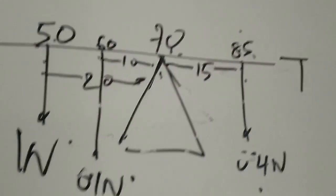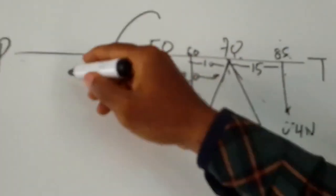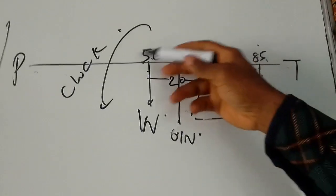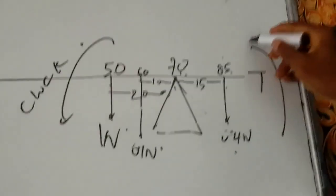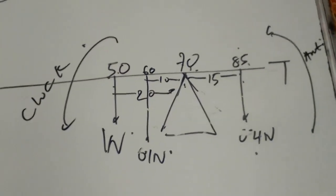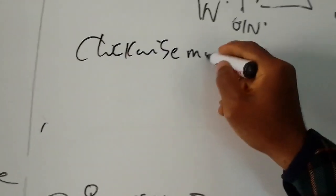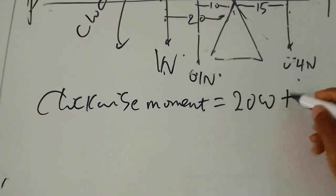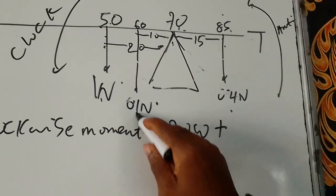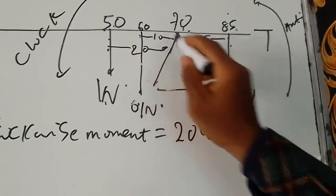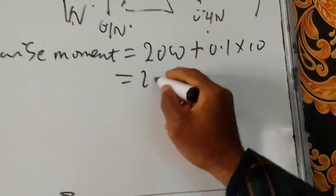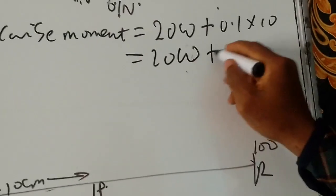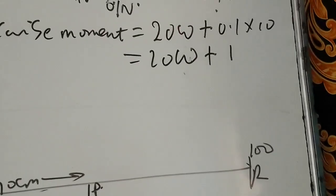Let's assume we rotate the meter rule. Taking this direction as clockwise, and the other side as anti-clockwise. For clockwise moment — moment is force times perpendicular distance — the force here is W multiplied by 20, giving 20W, plus 0.1 times 10, that is 0.1 times 10, giving us 20W plus 1. This is our clockwise moment expression.